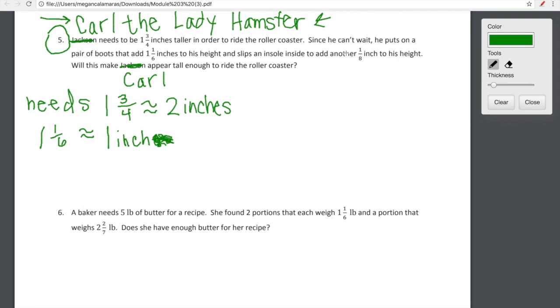And then he has these hamster insoles that add one eighth of an inch. One eighth of an inch, sorry to say Carl, isn't much, so we're going to go ahead and round one eighth of an inch to nothing. It's closer to zero than it is to one half or one whole. So Carl, in his infinite wisdom, has added one inch using the boots, and Carl has added zero inches. Sorry, we're rounding. That's what we're doing in lesson 13. So Carl has added about one inch to his hamster height, and Carl, I'm sorry to say, needed two inches to get on that roller coaster. So Carl, you're going to have to keep brainstorming new ways to add a little bit of height to your little furry hamster body. So unfortunately, Carl, I'm sorry to say that the answer here is no. Carl does not appear tall enough.